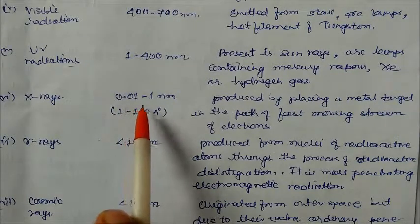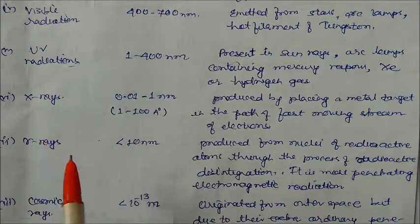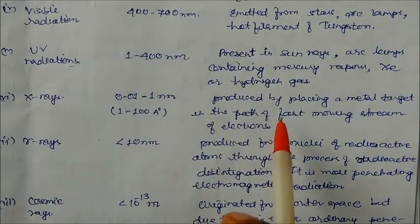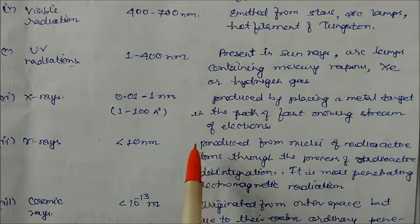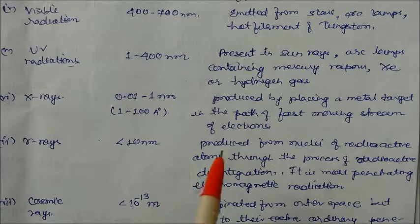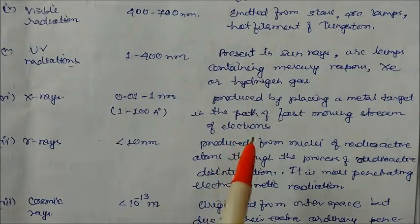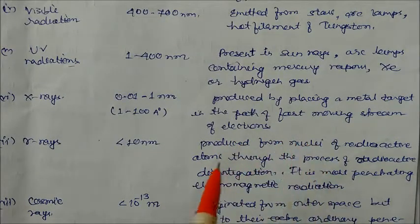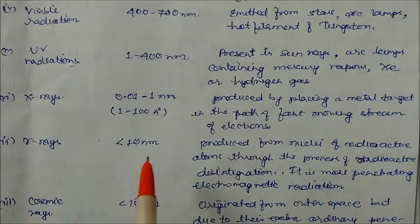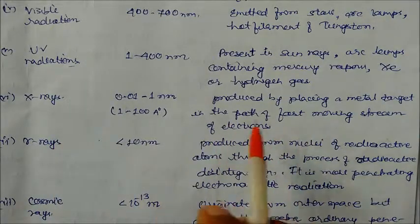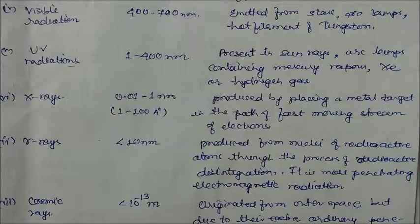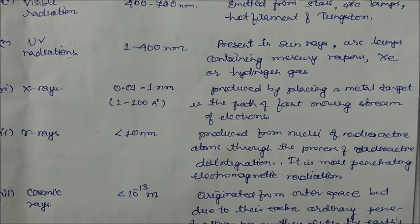X-rays have a wavelength range of 0.01 to 1 nanometer, or 1 to 200 angstroms. They are produced by placing a metal target in the path of a fast-moving stream of electrons, as seen in the cathode ray discharge tube. When cathode rays hit a heavy metal target, good X-ray wavelengths are produced.